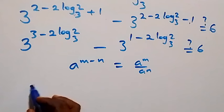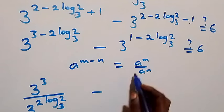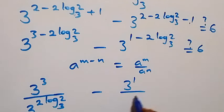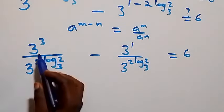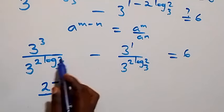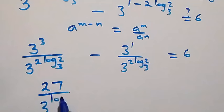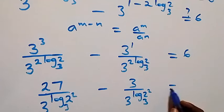This becomes 3 raised to power 3 over 3 raised to power (2 log 2 to base 3), minus 3 raised to power 1 over 3 raised to power (2 log 2 to base 3), equals 6. Applying the logarithm law a raised to power log b to base a equals b, we get 3 raised to power (log 2 squared base 3) equals 2 squared. So this simplifies to 27 over 2 squared minus 3 over 2 squared, equals 6.